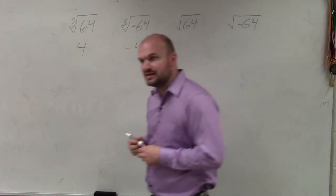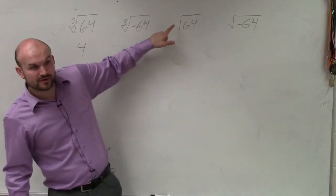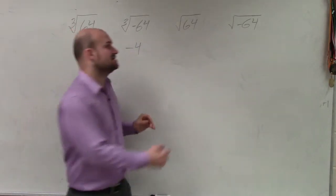However, on square roots, we can't really get that far. If I say what number multiplied by itself, which is the square root here, what number multiplied by itself gives you 64? We could say that answer is 8.